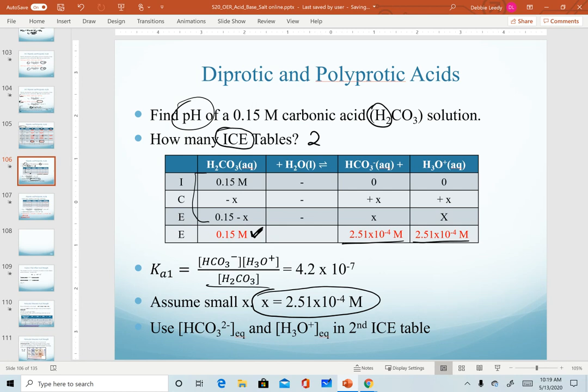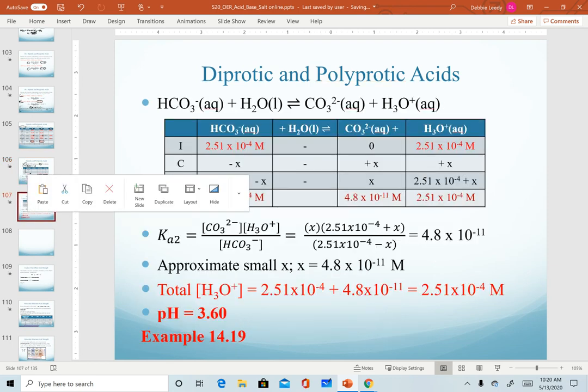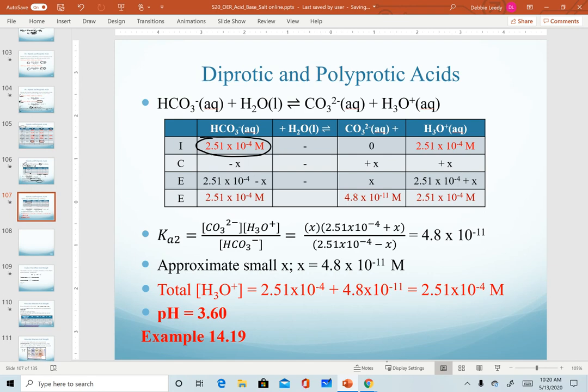So realize that in our second dissociation, these will actually become the initial concentrations when we set up our second ICE table. So notice our starting point for hydrogen carbonate is the x we solved for in the previous screen, and we start with a value of hydronium now.